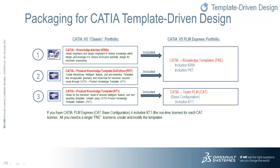These same three products are also available within the CATIA V5 PLM Express Portfolio. If you are a CATIA V5 PLM Express customer, your CAT license — which is your base configuration — already includes the most valuable asset amongst these three products, which is KT1. So all CAT users would already have this product, and you need only acquire a single license of CATIA Knowledge Template, or PKE. This PKE license includes both KWA and PKT, giving you everything you need to do template-driven design.